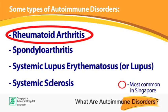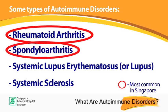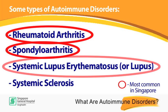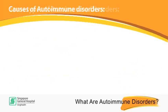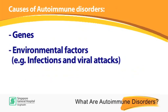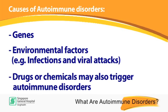Rheumatoid arthritis, spondyloarthritis, and lupus are among the most common autoimmune disorders in Singapore. The conditions are thought to be caused by a combination of genes and environmental factors such as infections and viral attacks. Drugs or chemicals can also trigger such diseases in some people.